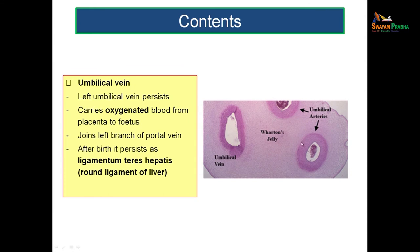There is one umbilical vein — initially two, but one degenerates and the one remaining is the left umbilical vein. Though called a vein, it carries oxygenated blood from the placenta to the fetus. It joins with the portal vein as part of fetal circulation. After birth, the umbilical vein degenerates and persists as the ligamentum teres hepatis, also known as the round ligament of the liver.